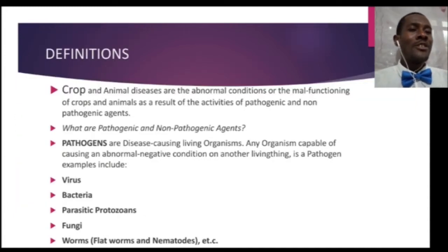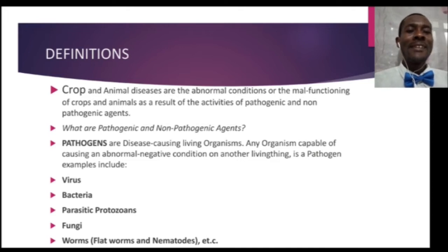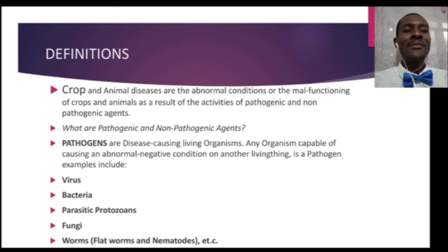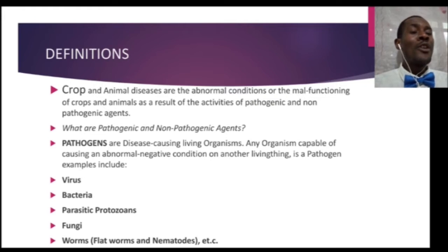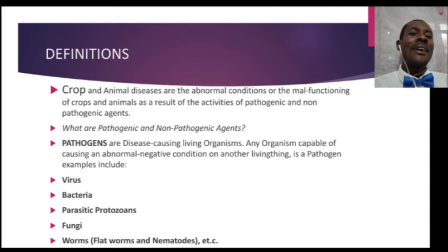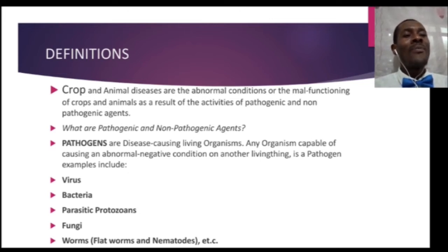Let's go on to the definitions. Crop and animal diseases are the abnormal conditions or the malfunctioning of crops and animals as a result of the activities of pathogenic and non-pathogenic agents. In our environment, we have a lot of things that can cause diseases, both on humans and in agricultural products.